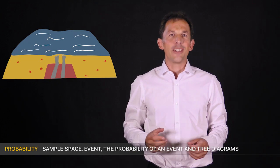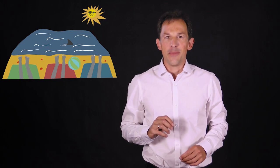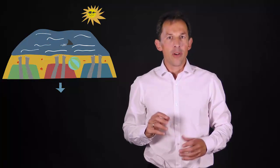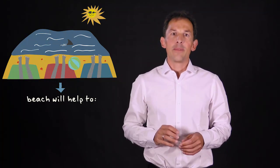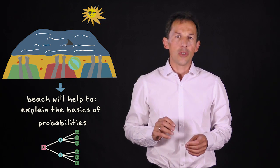Beaches can be eventful places, especially when the weather is good, there are some people around, and there are things to do and see. This type of beach is the backdrop for this video, where I am going to explain some basic concepts that help to find probabilities, and also a visual aid to do so, a tree diagram.